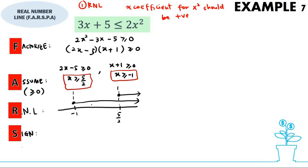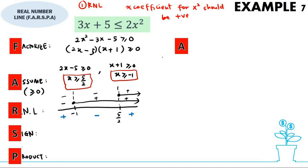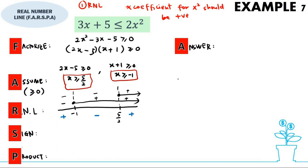Since we assumed greater than or equal to 0, the region with lines gets a positive sign, while those without lines get a negative sign. Then P stands for Product — we multiply the signs together. Negative times negative is positive, negative times positive is negative, and positive times positive is positive.